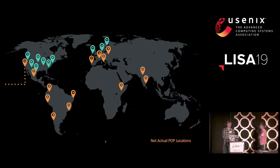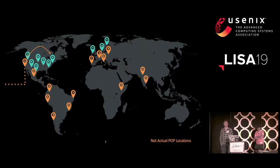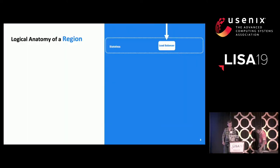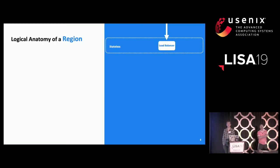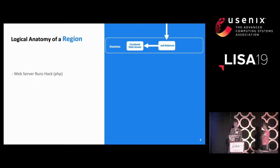At this point, it hits a software load balancer, which routes it to one of our origin regions. Origin regions are the places where we build data center buildings and run the application code of Facebook.com. Inside one of those, the request first hits a software load balancer, which forwards it to a web server — pretty straightforward so far.